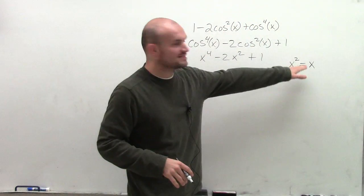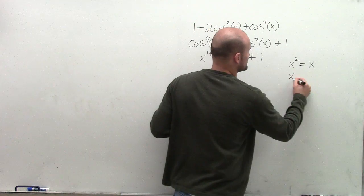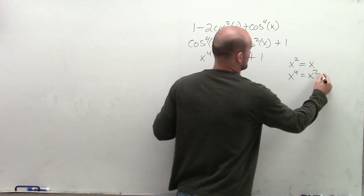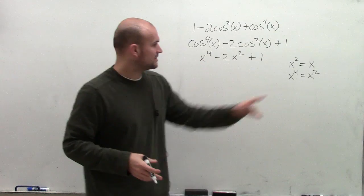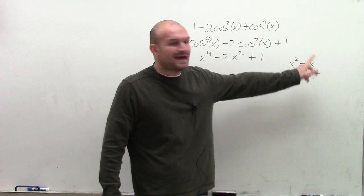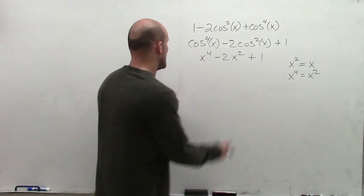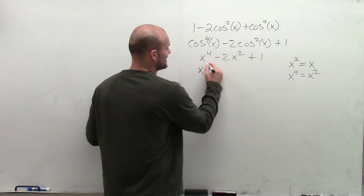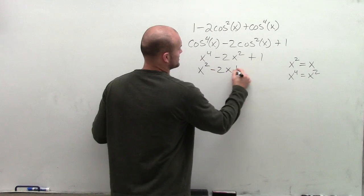So if x squared equals x, that means x to the fourth is going to equal x squared, right? Because if you're going to take x squared equals x, if you square x squared, you get x to the fourth. Squaring x gives you x squared. So now we will rewrite this as x squared minus 2x plus 1.